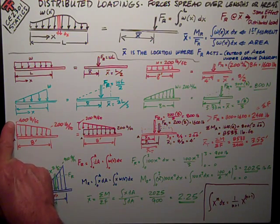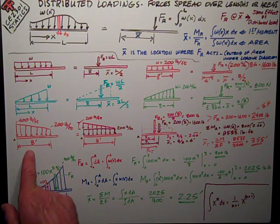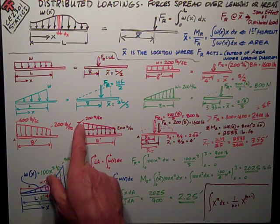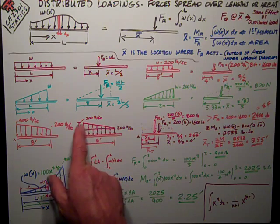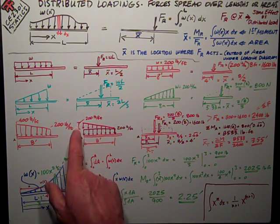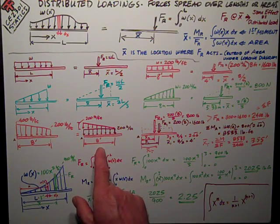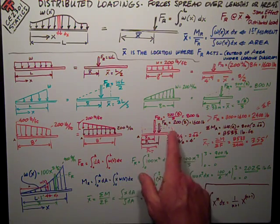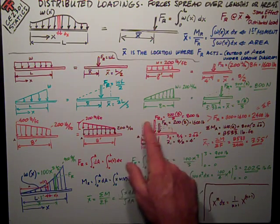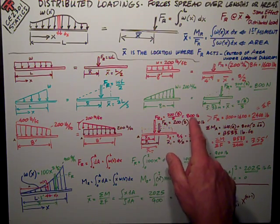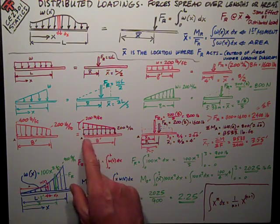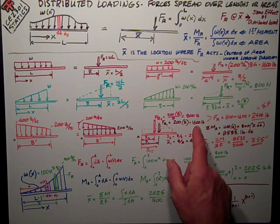If I have a trapezoidal-shaped loading, 400 pounds per foot at this end, 200 pounds per foot at this end over 8 feet, I can break it up into a triangle and a rectangle, each of which have 200 pounds per foot at their maximum value for the triangle and uniformly distributed for the rectangle, over 8 feet. I can break the triangle up into what I call FR2, which is 200 pounds per foot times 8 feet divided by 2, 800 pounds. I can break the rectangle part as just 200 times 8, or 1600 pounds.